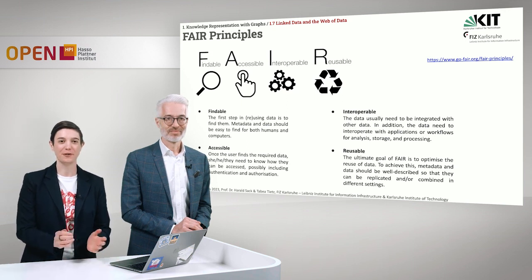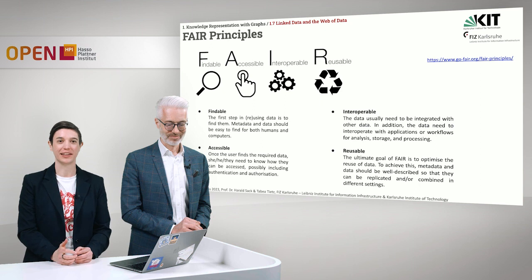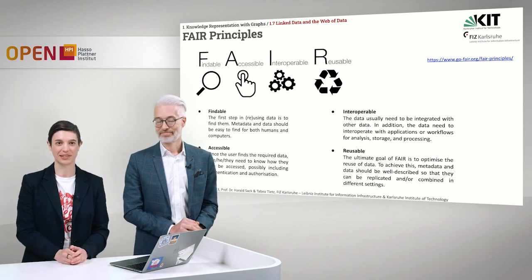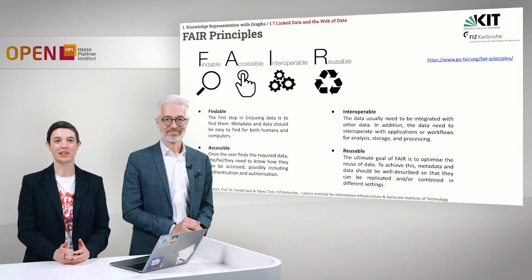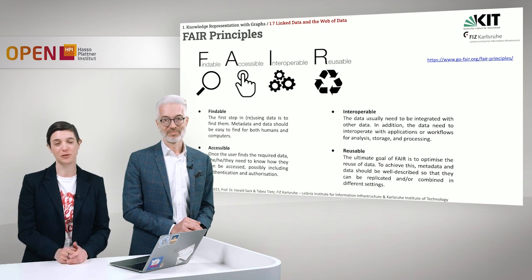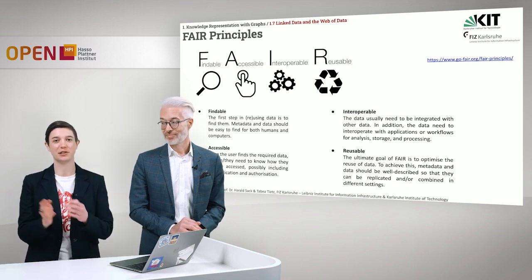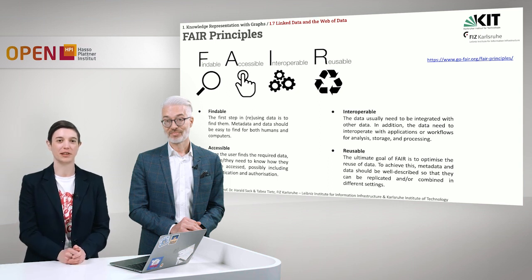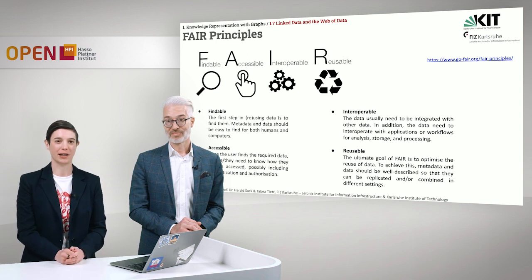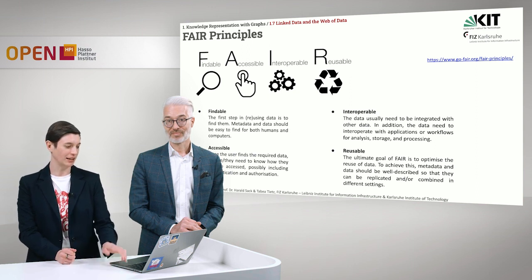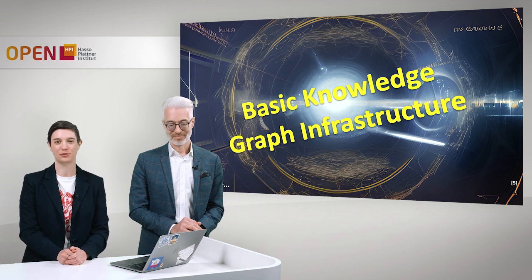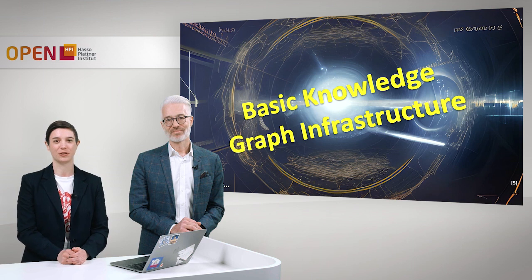Next to the five-star linked open data, we can also look at the FAIR principles, which are guidelines to make sure that data is Findable, Accessible, Interoperable, and Reusable. The good news is, if we are using linked data and semantic web technologies, our data already comply to these FAIR principles. We will come back to these FAIR principles later in the lecture. This concludes the first week of our knowledge graph course, and we hope to see you next week in basic knowledge graph infrastructure. Thank you.